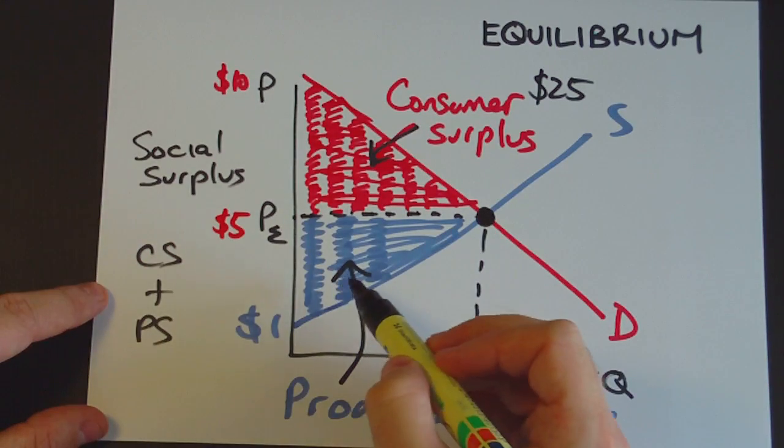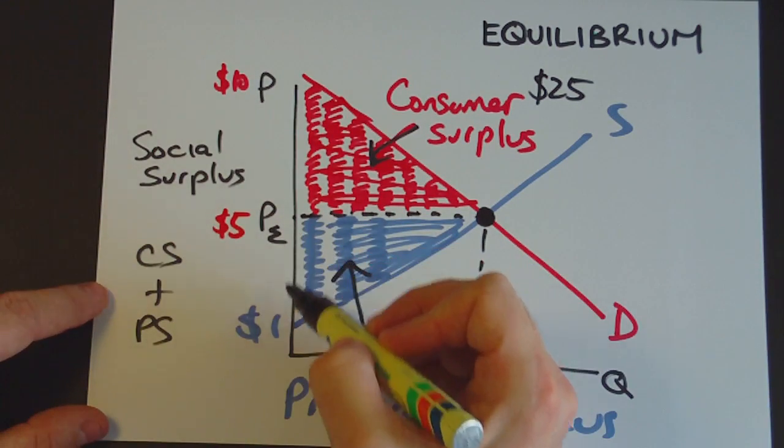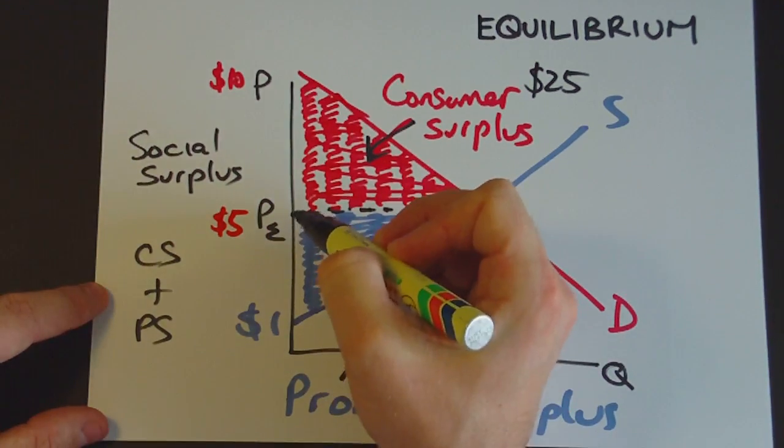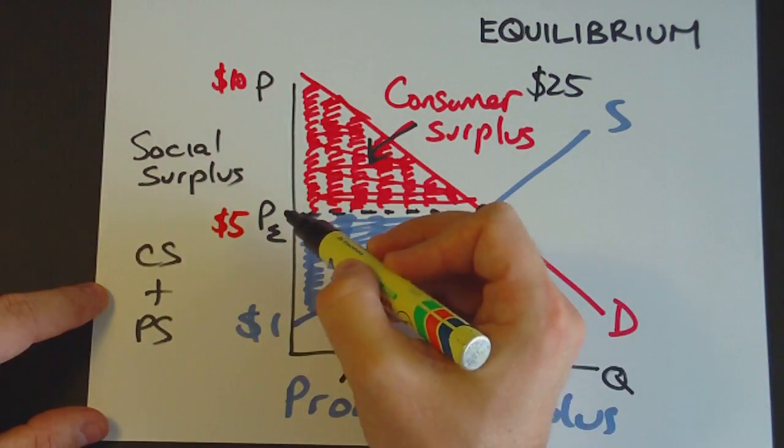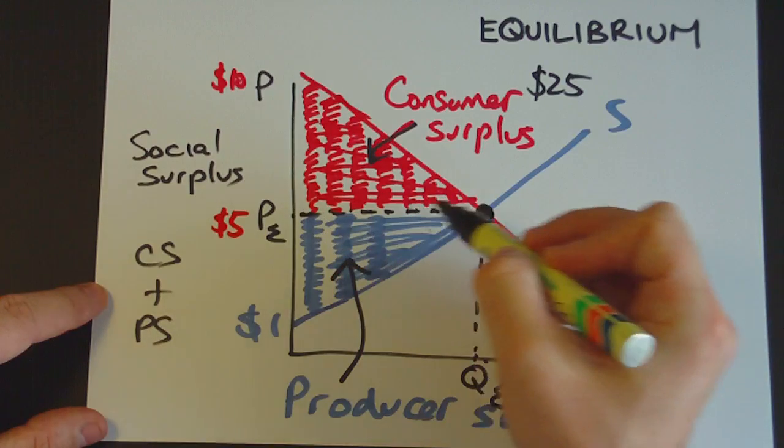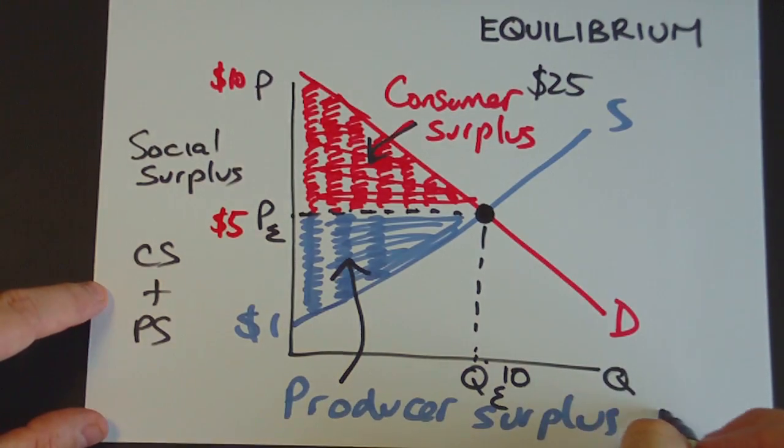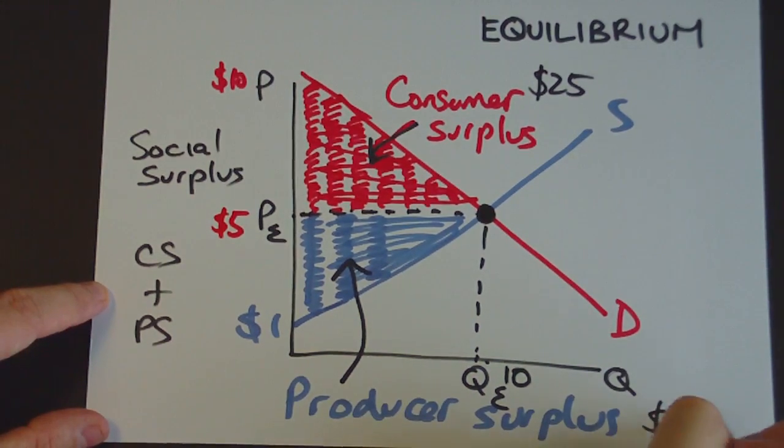Likewise producer surplus. Well, again, this is a triangle. The height is $4 in this case, from $1 to $5. The base is $10 here. So $4 times $10 is equal to $40. So the producer surplus is equal to $20.